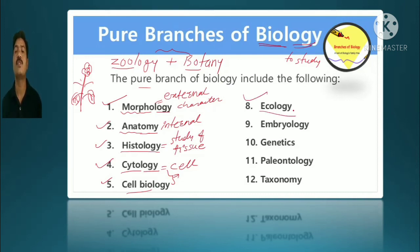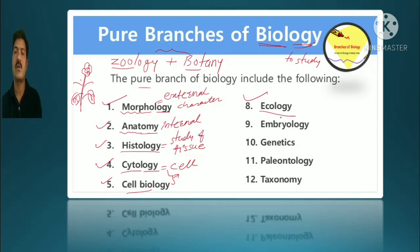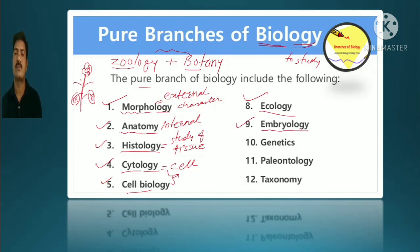The next branch is ecology — the study of the environment, called Paryavaran Shastra in Marathi. It covers pollution, Earth's environment, and related topics. Then there is embryology — the study of embryonic structure.